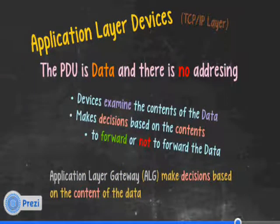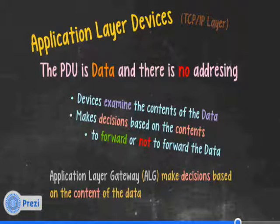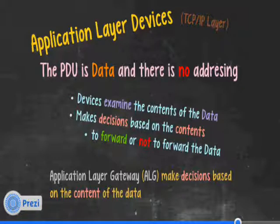Application layer devices: the PDU is data and there is no addressing. Devices examine the contents of the data and make decisions based on the contents to forward or not forward the data. For example, it can check email to see if it's spam, or check web addresses to decide if the content is allowed. Application layer gateways, or ALGs, make decisions based on the content of the data. Sometimes we'll hear this called stateful packet inspection — we're actually looking into the content and making a decision.